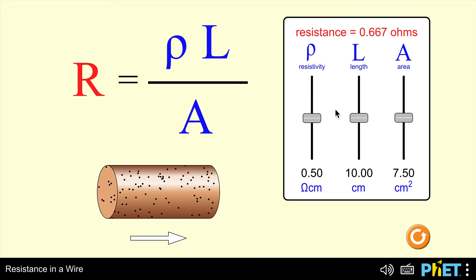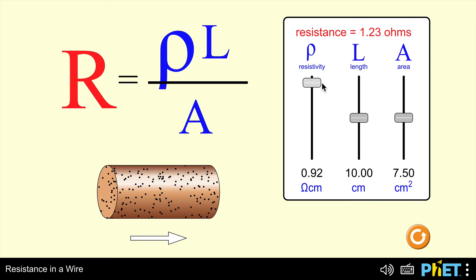First of all, resistivity. If we think about copper, which is a good conductor of electricity, it would have a low resistivity. Something which doesn't conduct as well as copper would have a higher resistivity. Copper would have a very low resistivity, around about here, whereas iron would have a much higher resistivity, around about there, around about five or six times higher.